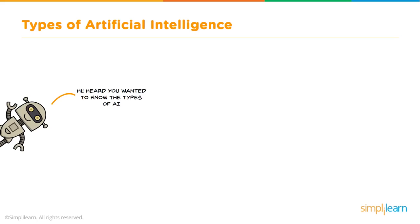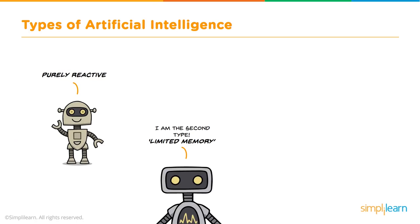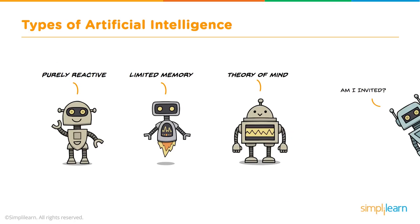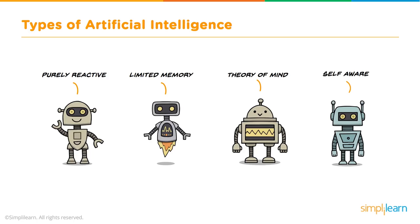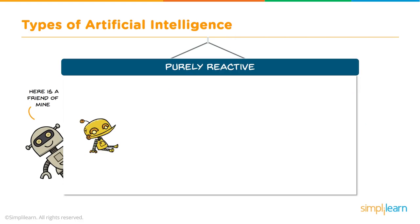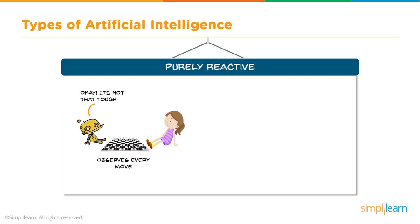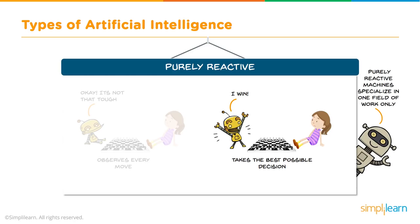Types of artificial intelligence: the first type is purely reactive, with no past memory or data — it takes actions and reacts based on what it sees, like Deep Blue observing every chess move and taking the best possible decision. Purely reactive machines specialize in one field only. The second type is limited memory — these machines use previous data and keep adding it to their memory. For example, when asked to suggest a restaurant, the AI checks previous location data and says there's a KFC nearby since you've been there a lot recently. It has enough memory to make proper decisions, but memory is very limited.